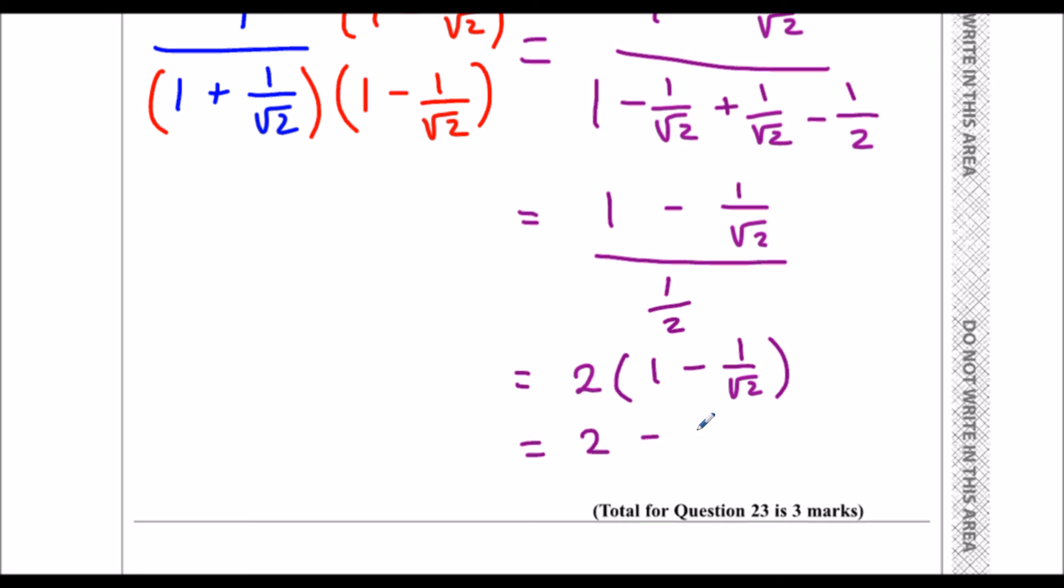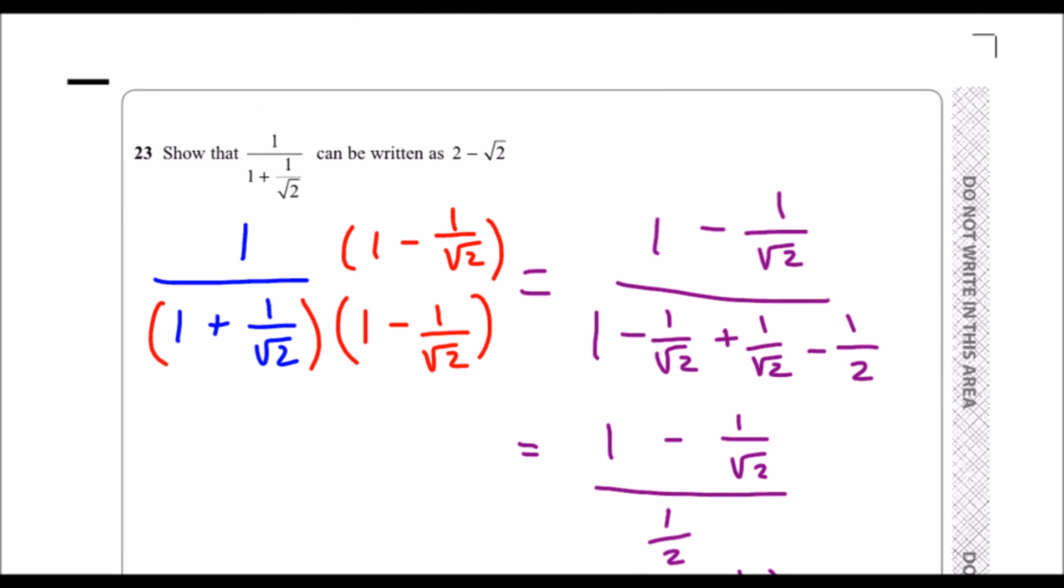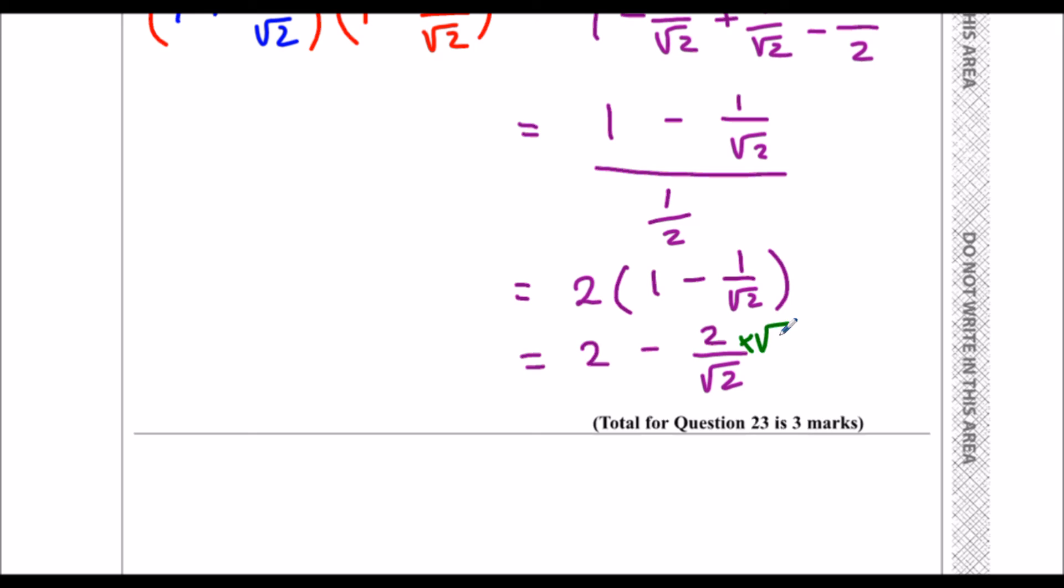Which is 2 minus 2 over root 2. I've almost got what I wanted - I wanted 2 minus root 2. I need to rationalize the denominator again on this, so times top and bottom by root 2. That will give me 2 minus 2 root 2 over 2, which is 2 minus root 2.